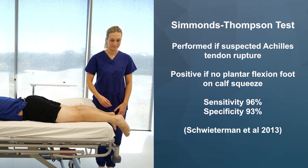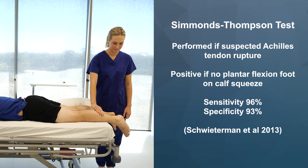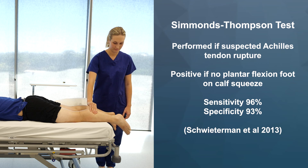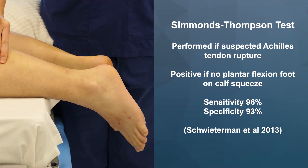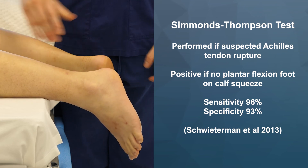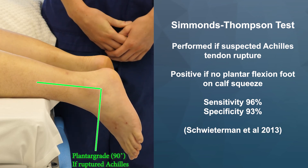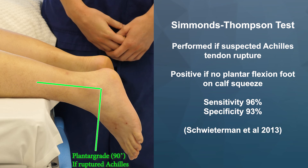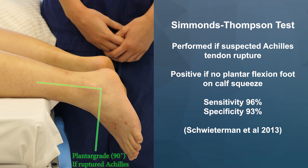Now to perform the Simmonds-Thompson test. Ask the patient to lie on their stomach — prone — with feet hanging off the edge. Squeeze each calf in turn and the foot should plantarflex. Absence of plantarflexion of the foot is a positive test, suggestive of Achilles tendon rupture. Remember to assess the foot resting position — a full thickness Achilles tendon injury will have the foot abnormally dorsiflexed compared to the contralateral side.